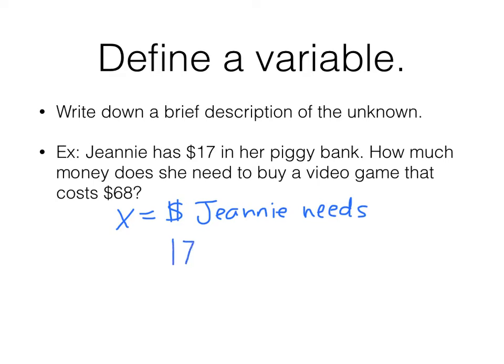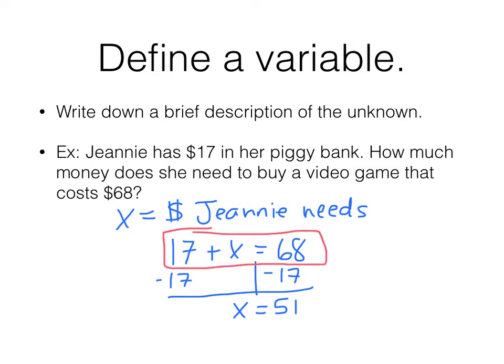So X is the money Jeannie needs. She has 17. She needs X dollars to get the video game that's $68. And yes, of course, we can go ahead and solve it by subtracting 17 from each side. But again, the equation is the thing like Shakespeare. The play is the thing. The equation is the thing. That's what we're trying to do here. We're trying to make sure we understand how to write them. So that one was pretty easy. Let's do another.